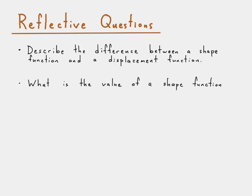And then the next one is, what is the value of a shape function at its corresponding degree of freedom or node, in this case since we are looking at a truss element? And how about if we look at the other node, or any other node in case of a shape function for things like 2D elements?